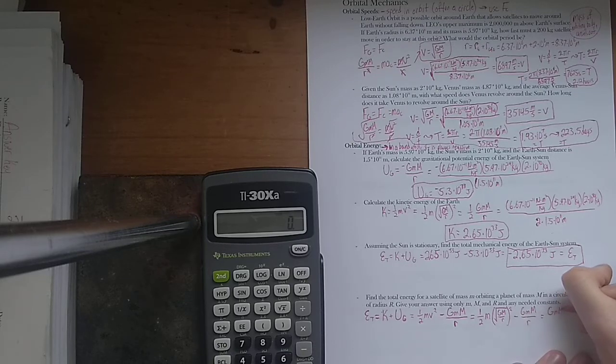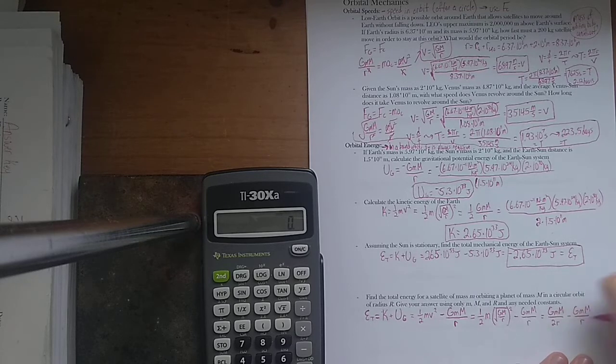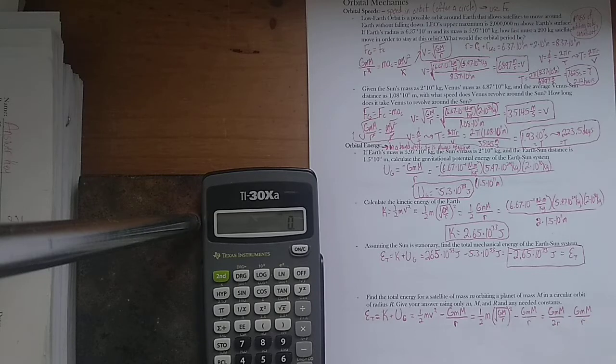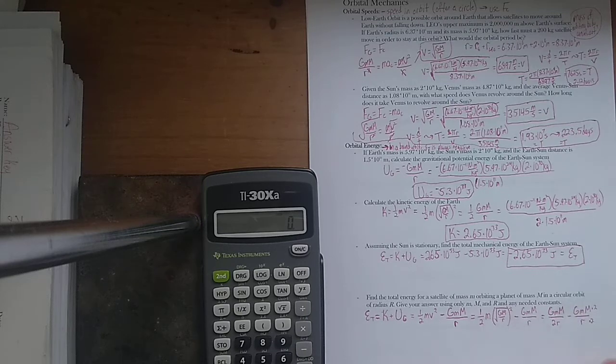G little m, big M, over 2R, minus G little m, big M, over R. And as we know, when we subtract, we need to have a common denominator in order to actually subtract. So I would need to multiply this by the bottom by 2 and the top by 2, and that will leave me with this.